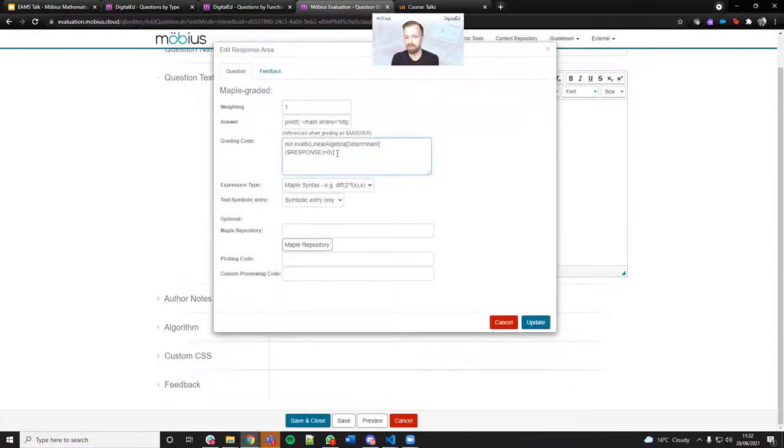You can see that's actually some very simple grading code here. It's just evaluate, make sure the determinant is not zero. What's really nice about using Maple and Mobius for grading logic is that a lot of the time you don't need a huge amount to be able to do it. You just need to think about it mathematically.